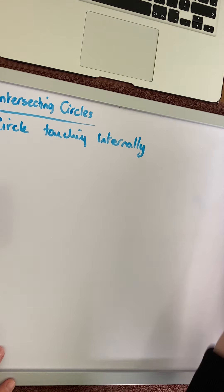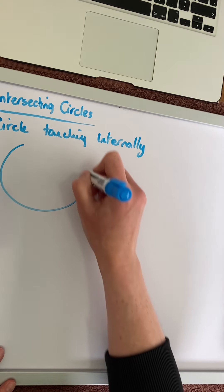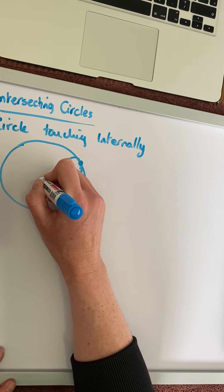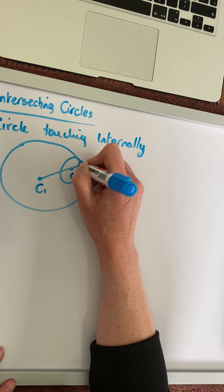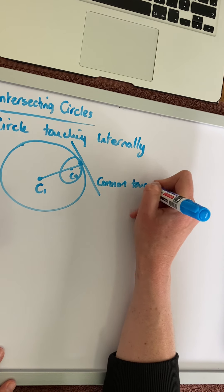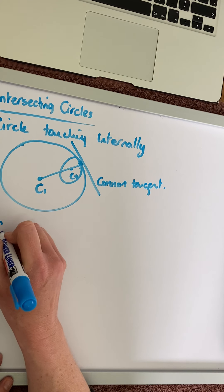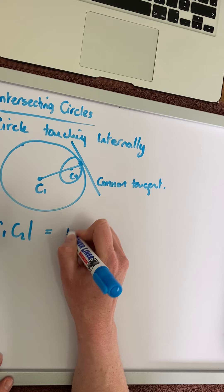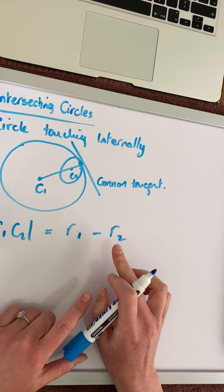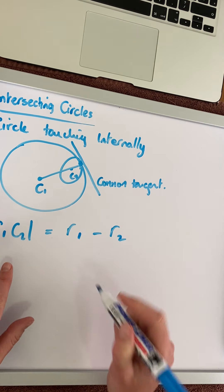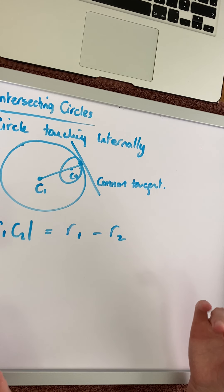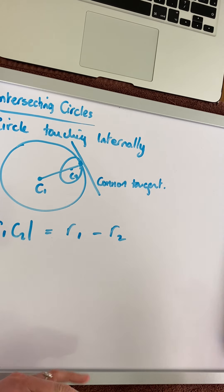Now we're going to look at circles touching internally. Internally means we have a bigger circle and a smaller circle with a single point of contact, and a common tangent. This time, the distance between the centers is equal to the difference between the radii. We always subtract the smaller radius from the bigger radius. If the bigger circle is circle 1, do radius 1 minus radius 2. If the bigger circle is circle 2, do radius 2 minus radius 1.